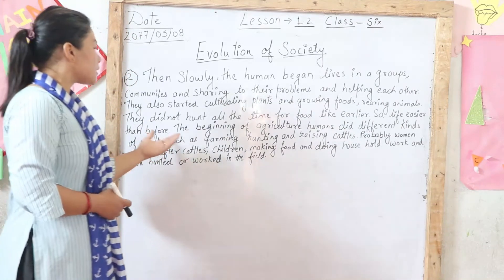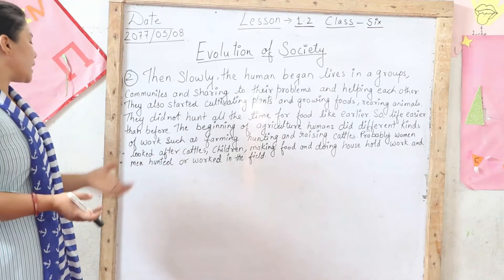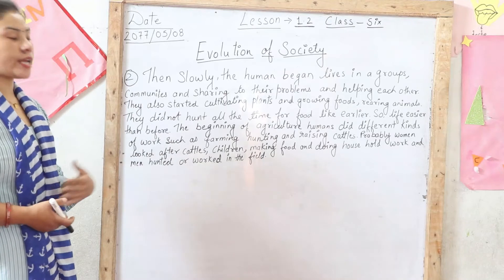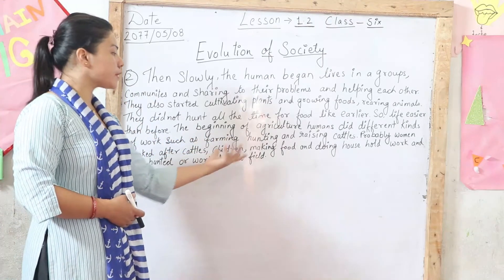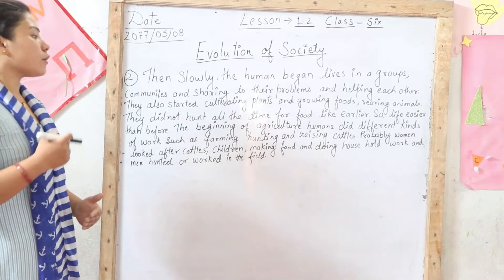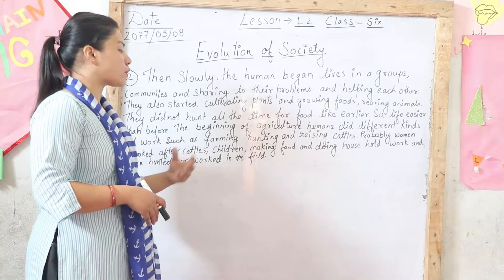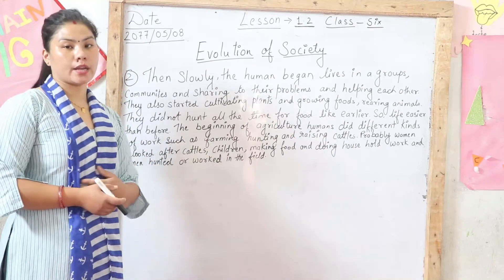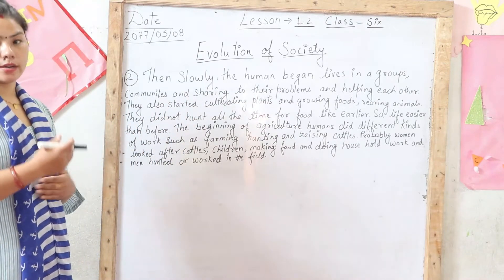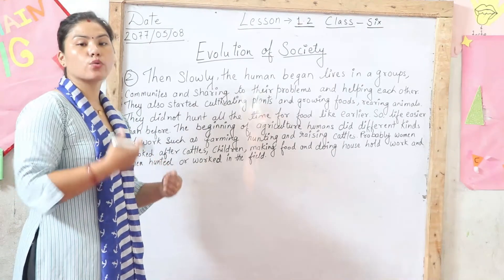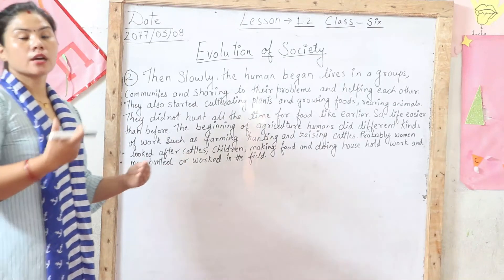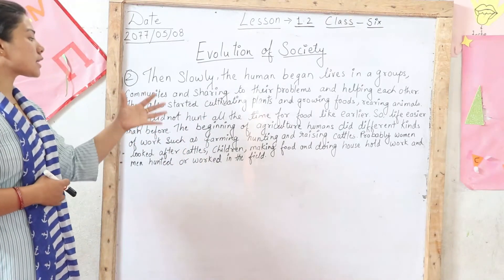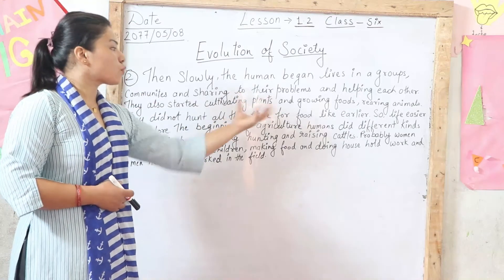With the beginning of agriculture, humans did different kinds of work such as farming, hunting, and raising cattle. Women looked after the cattle and children, made food at home, and did household work, while men went to hunt and work in the fields. Using fire, they cooked food. They started living in groups and communities, sharing their problems, helping each other, cultivating plants, growing food, and rearing animals.